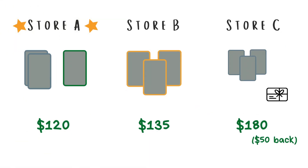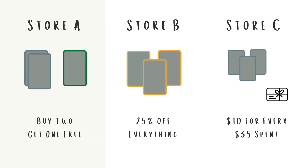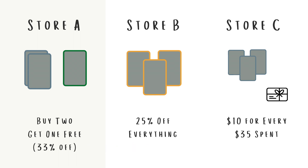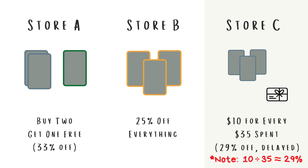So did you guess correctly earlier? Store A has the best deal. Now that I've made you do all this math, you can also approximate this in a couple minutes or even seconds with some mental math. For Store A, since it's buy two get one free, this pretty much means the games are one-third off, which is roughly 33% off because all three games cost the same. For Store B, this is just 25% off. And for Store C, if you get $10 for every $35, this means you get about 29% off.